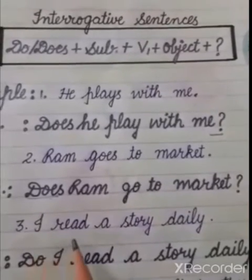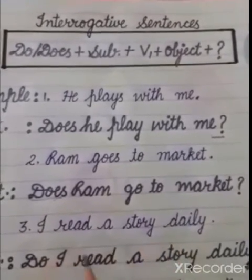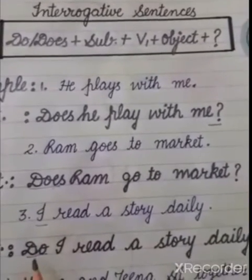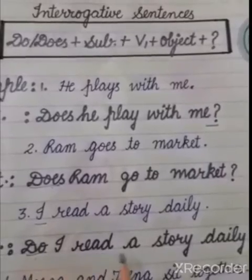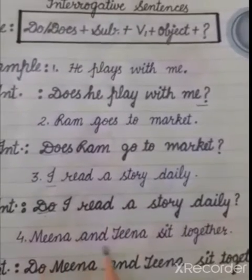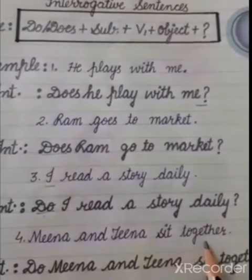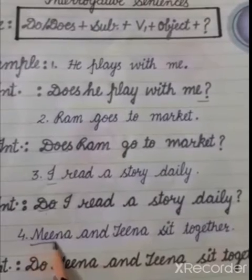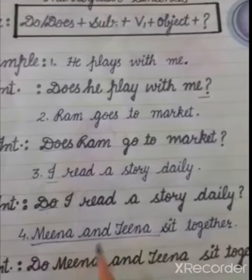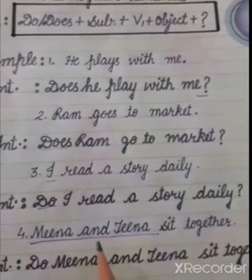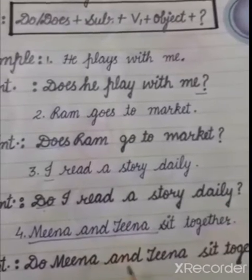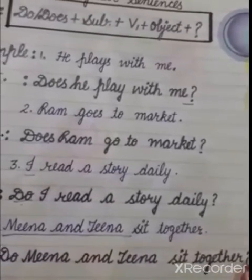Third example: I read a story daily. Our subject is I, so we use do — Do I read a story daily? Fourth example: Mina and Tina sit together. This is a plural noun, so we use do — Do Mina and Tina sit together?